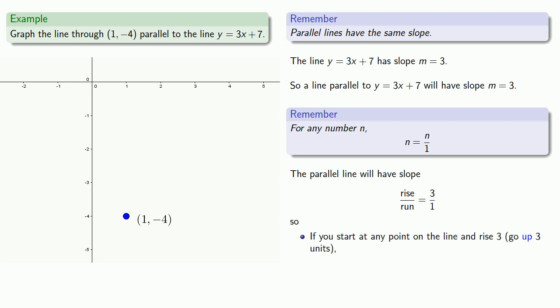And so if you start at any point of the line and rise 3, go up 3 units, and then go right 1 unit, you'll get to another point of the line.